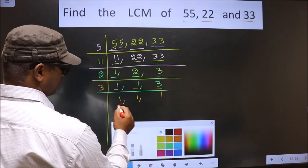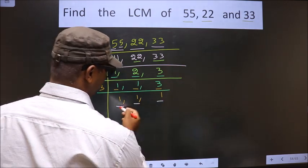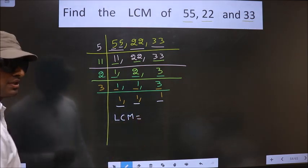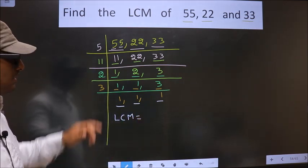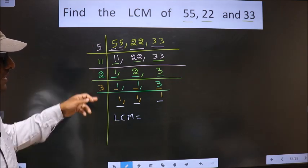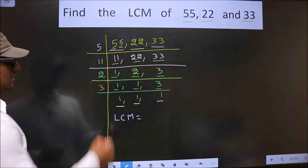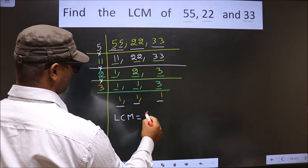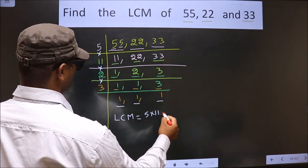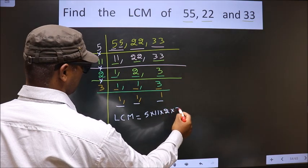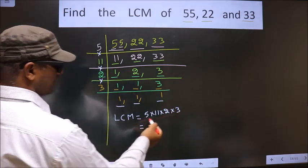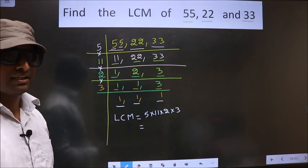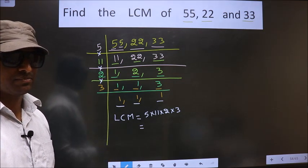So now we got 1 in all the 3 places. So now our LCM is—LCM is the product of these numbers. 5 into 11 into 2 into 3. You multiply all these numbers. Whatever number you get, that is your LCM.